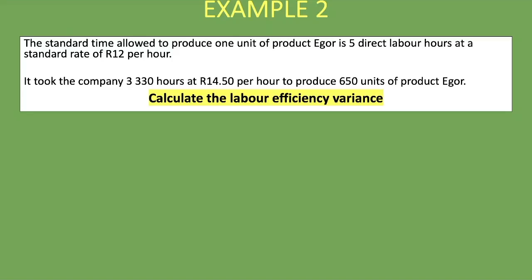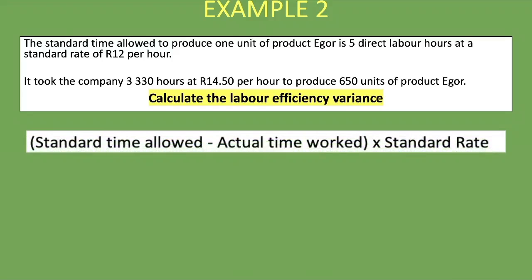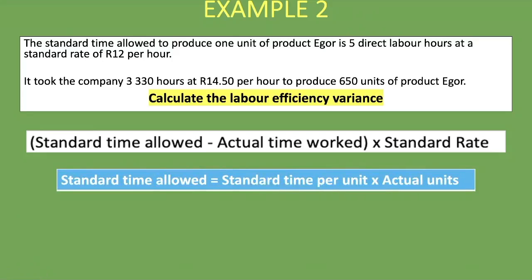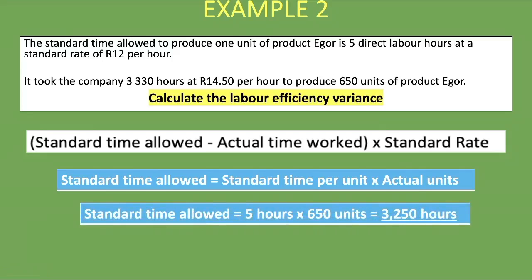Applying the formula: Standard Time Allowed − Actual Time Worked × Standard Rate. The standard time per unit is 5 direct labor hours. Multiplying by actual units produced: 5 × 650 = 3,250 hours. That is our standard time allowed — the time we expected it to take to produce the 650 units.